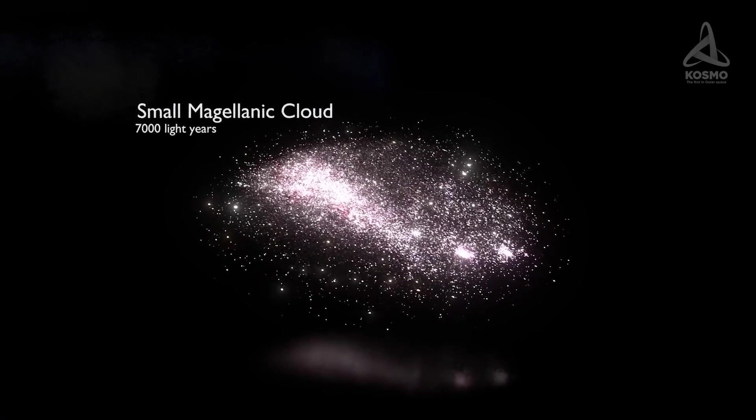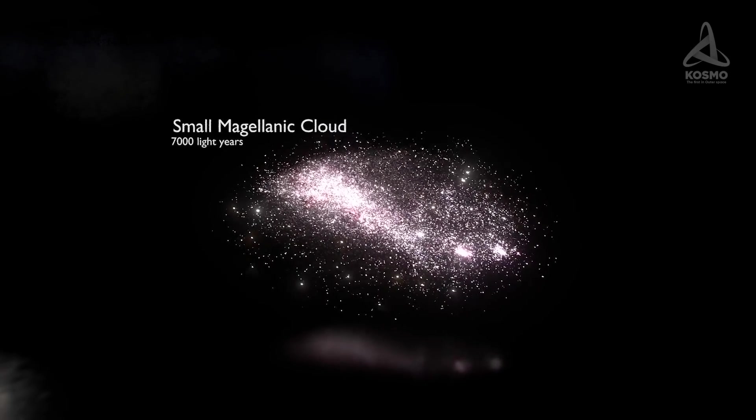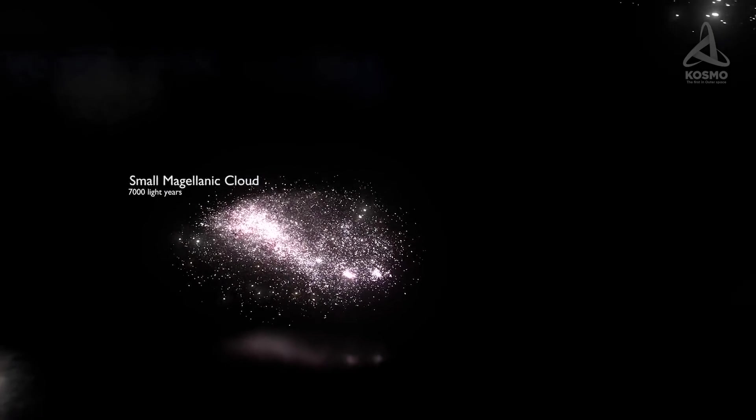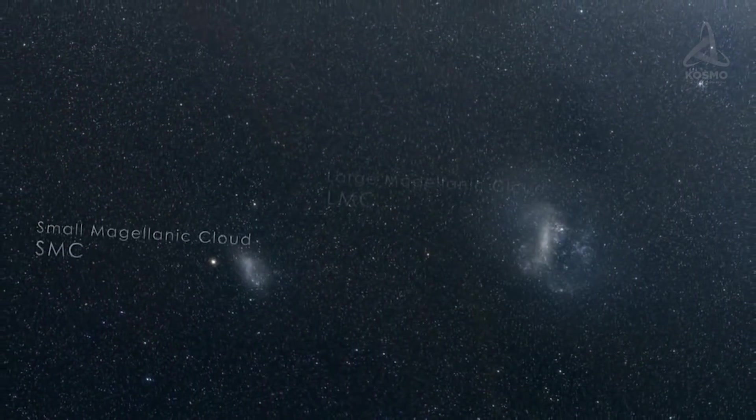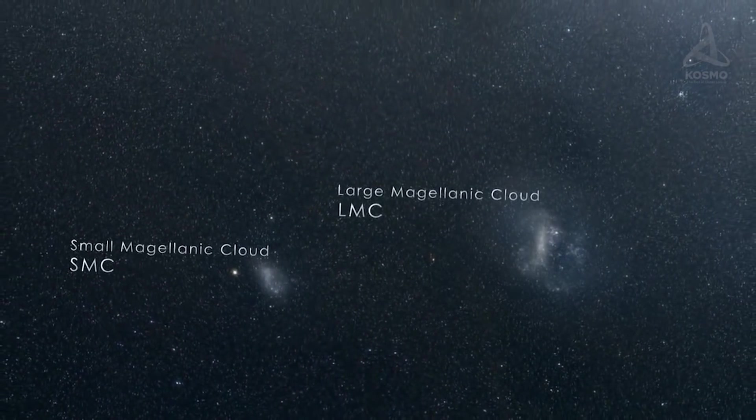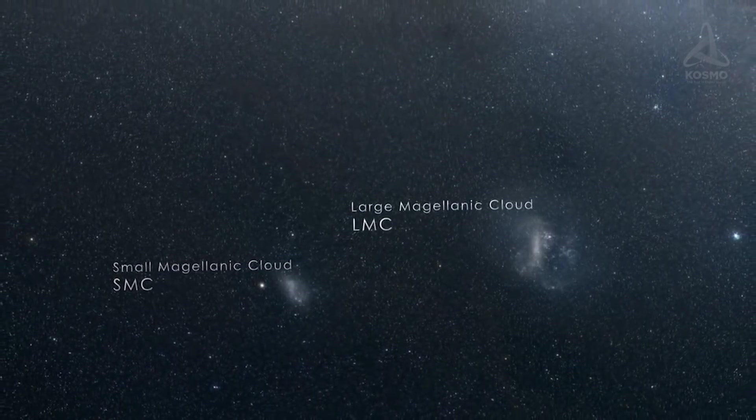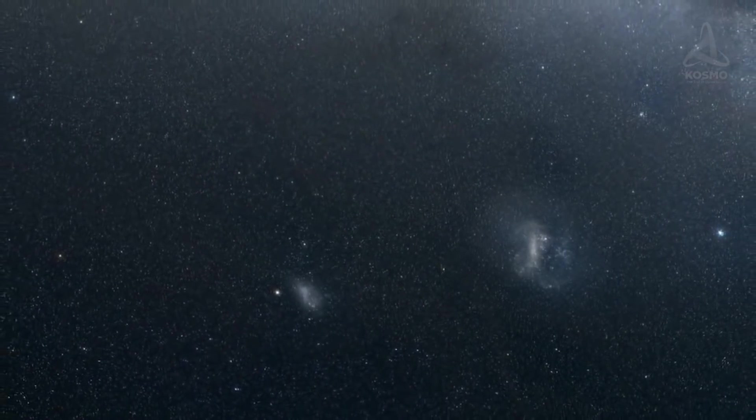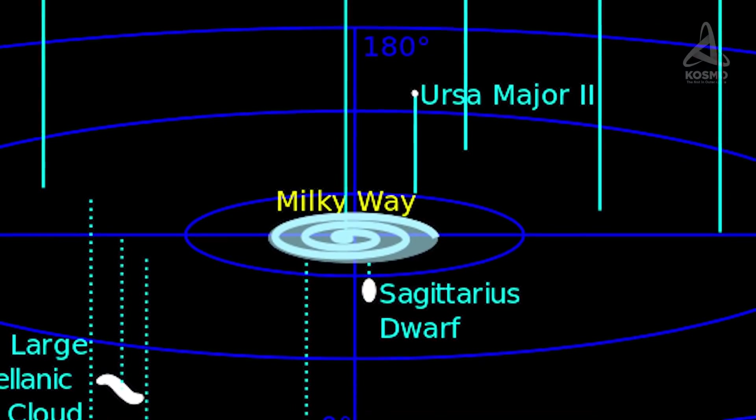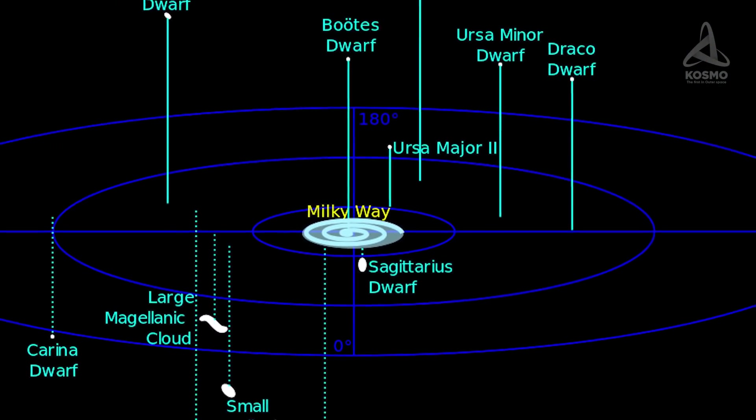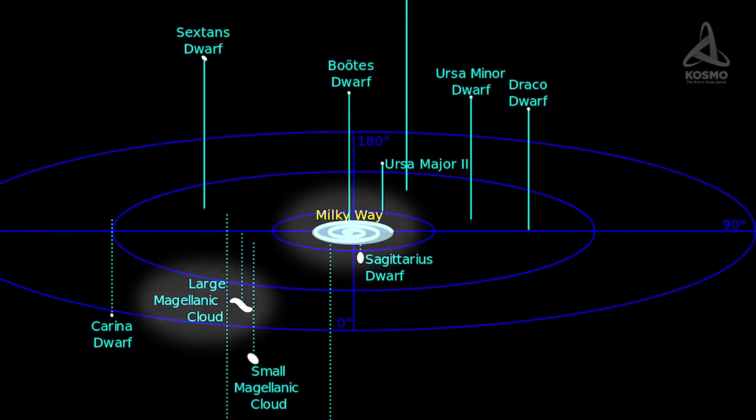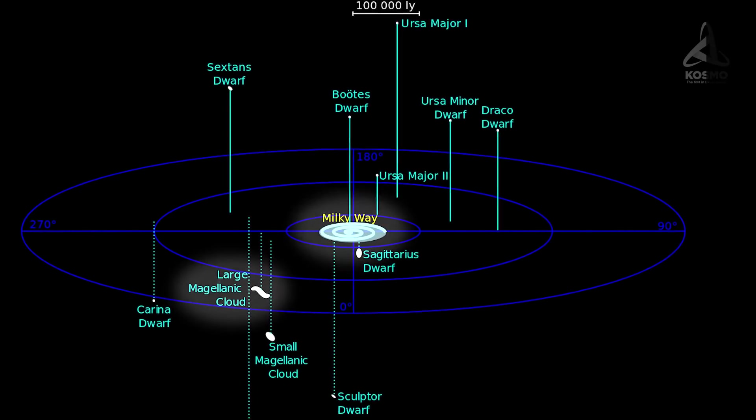When speaking about our nearest neighbors, one can't but mention the Large and the Small Magellanic Clouds, two dwarf galaxies and satellites of the Milky Way. The Large Magellanic Cloud is 163,000 light-years away from us. That is a distance twice as big as the diameter of our galaxy.